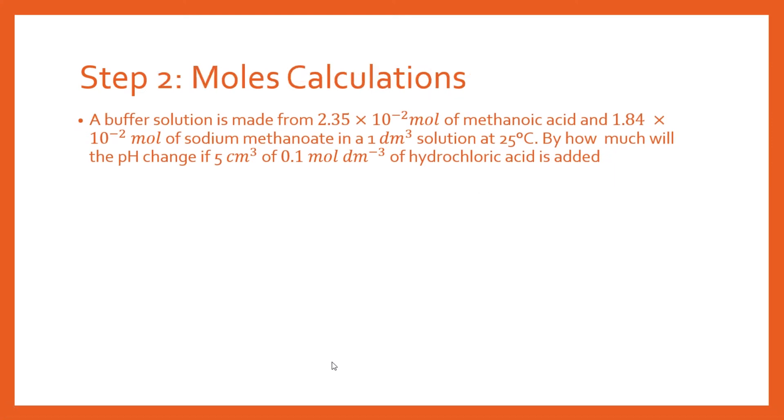The next step is we need to do some moles calculations to do with the hydrochloric acid. And you'll notice that we've got 5 centimeters cubed of the hydrochloric acid, and we've got a concentration. And you should also be aware that you've got centimeters cubed and you've got dm³. And so you need to make sure that you're working in consistent units. So this centimeters cubed is going to have to be converted. So our moles of acid is going to be our concentration of 0.1 times our volume, but we're dividing by a thousand to convert it so there's consistent units in the calculation. And when we evaluate that, we've now got the moles of the acid that has been added.